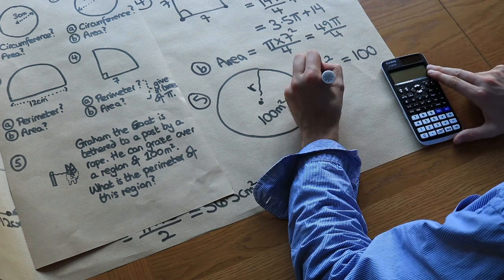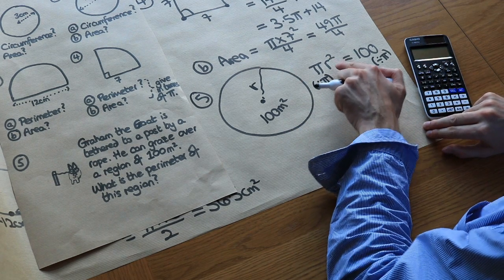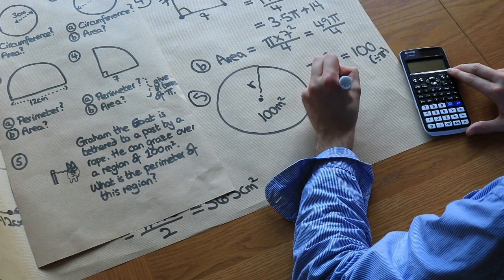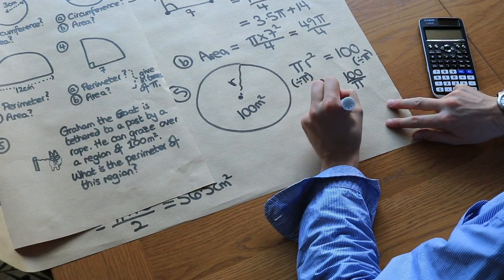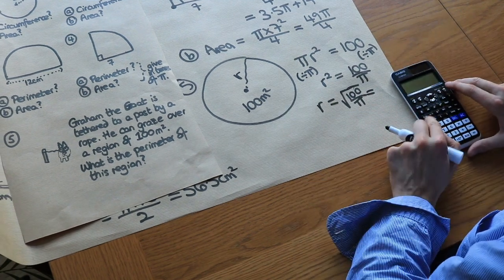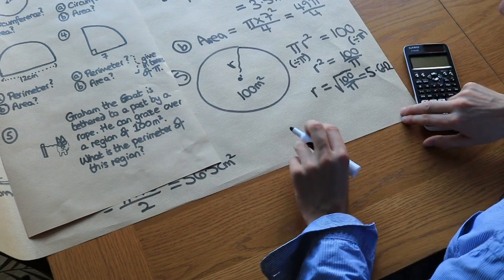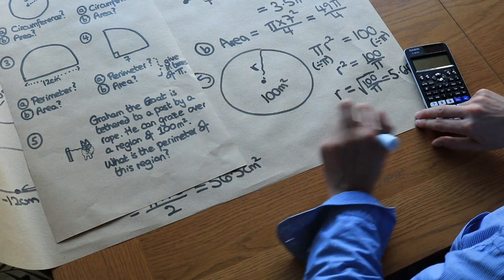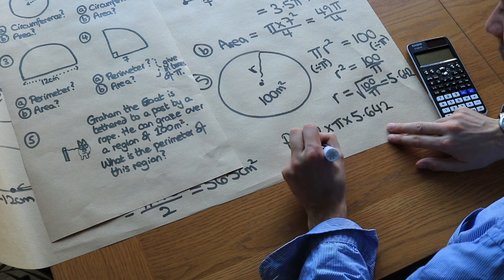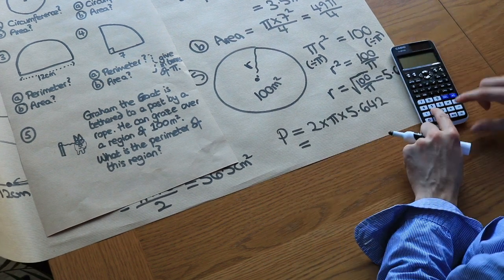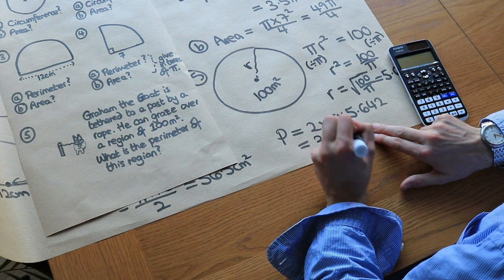We need to solve for r. Since r is first squared then multiplied by pi, we divide both sides by pi first, giving r² = 100/π. Then we square root both sides: r = √(100/π), which is 5.642 meters. Now we find the perimeter — the circumference of this circle: C = 2πr = 2 times π times 5.642. Using the answer key on the calculator to keep the exact value, that gives a perimeter of 35.4 meters.